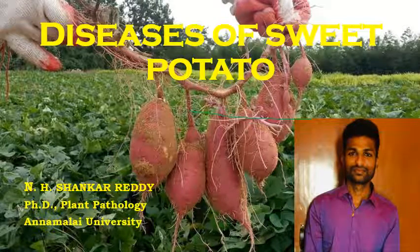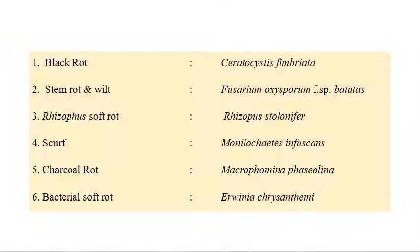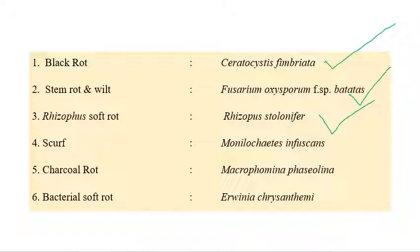We will now see the list of important diseases in sweet potato. The first is black rot, caused by Ceratocystis fimbriata. Stem rot and wilt is caused by Fusarium oxysporum f. sp. batatas and Rhizopus. Soft rot is caused by Rhizopus stolonifer. Scurf is caused by Monilochaetes infuscans. Charcoal rot is caused by Macrophomina phaseolina, and bacterial soft rot is caused by Erwinia chrysanthemi.